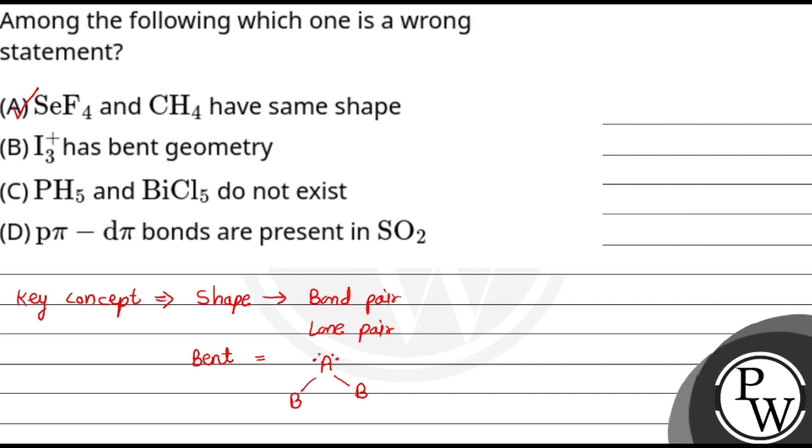Option D: p-pi d-pi bonds present in SO2. SO2 structure has sulfur with d orbital (3d) and oxygen has p orbital (2p), and here the overlapping is d-pi p-pi bonds. We can say p-pi d-pi or d-pi p-pi bonds are present. What will be the incorrect statement? Option A. Hope you understood it well. Best of luck.